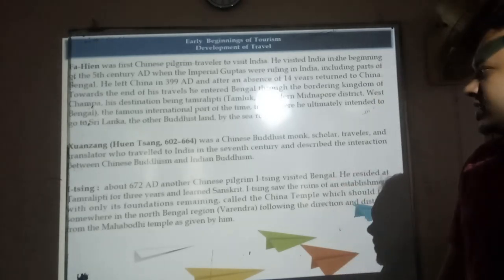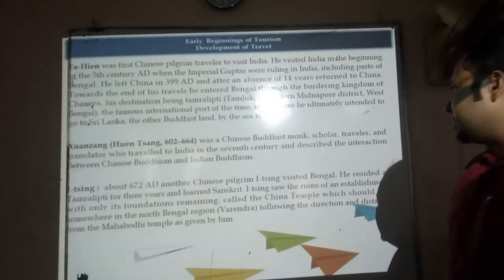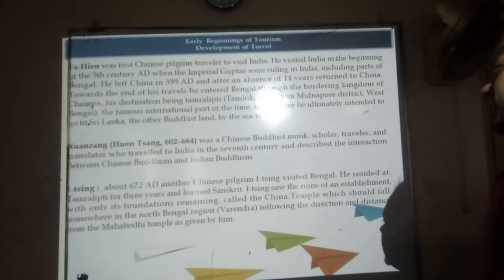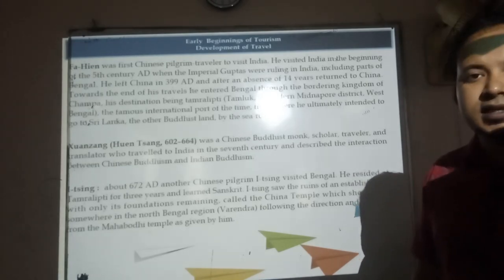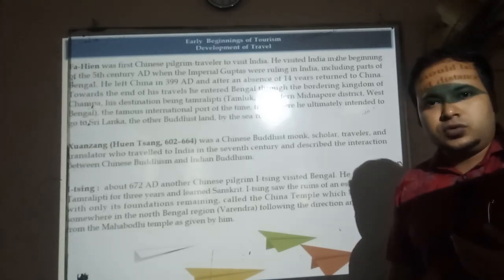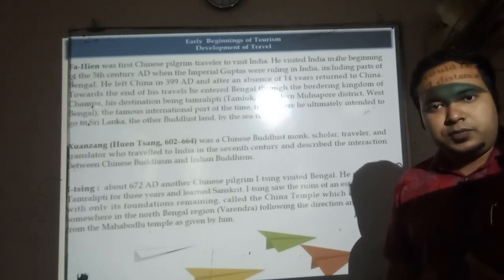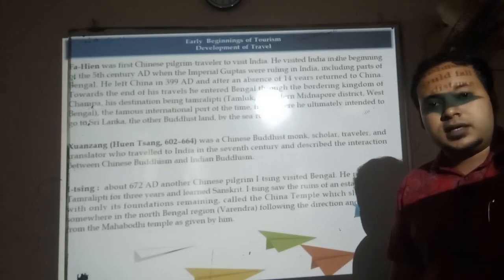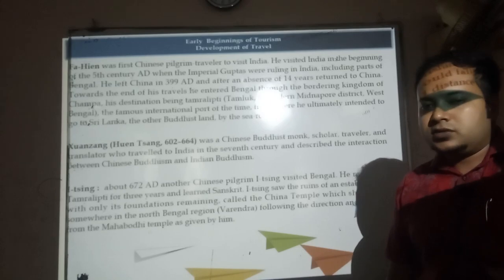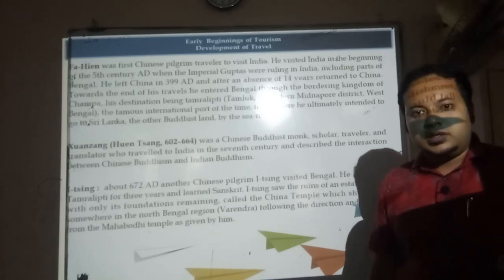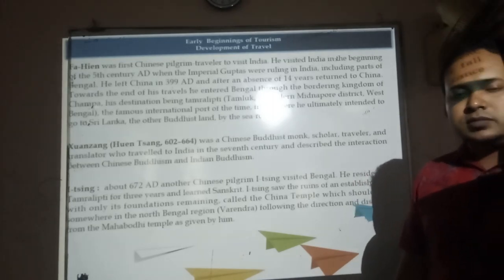Yi Jing, another Chinese pilgrim from around 670 to 680 AD, visited Bengal and resided at Tamralipti for three years, learning Sanskrit and cultural activities to understand tourism activities and how people interact and exchange views with one another. They contributed their knowledge and ideas to develop the tourism industry.